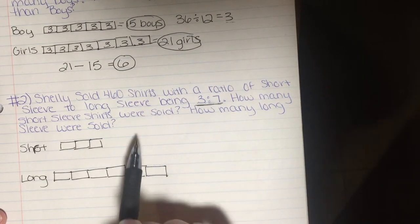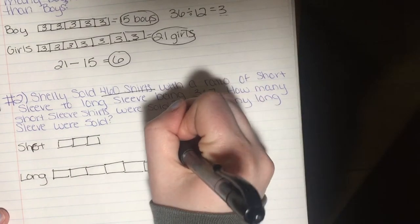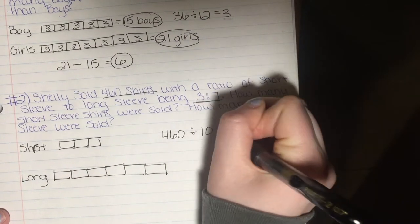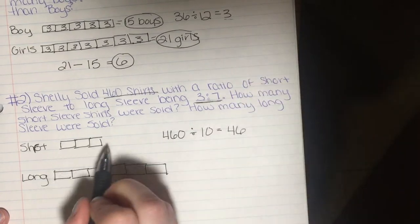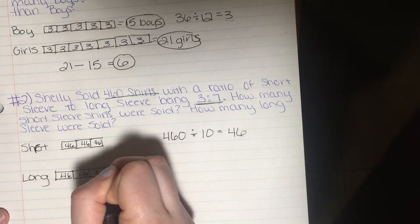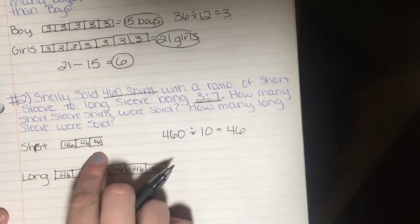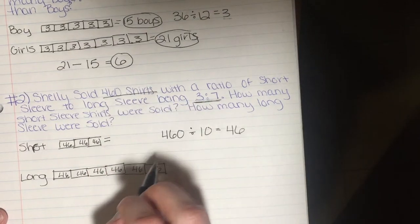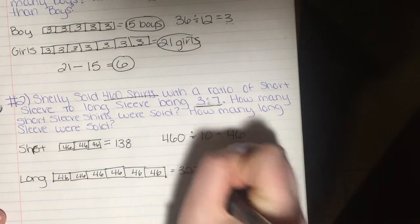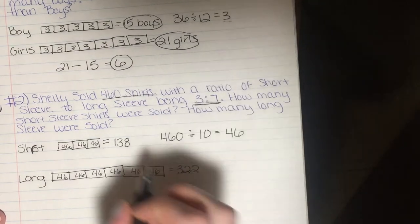We're going to do the same thing as before. We have 460 total shirts, so we're going to take 460 and divide it by the total number of boxes, which is 10, and that comes out to 46. So in each individual box we're going to put 46. Then we add up for short sleeve and for long sleeve: short sleeve is 138 and long sleeve is 322, which answers how many of each type of shirt were sold.